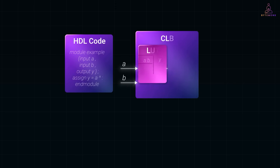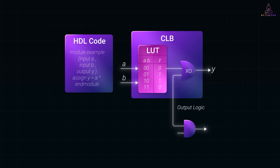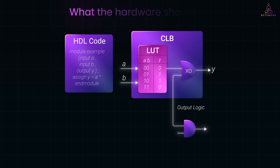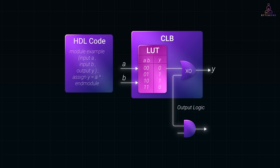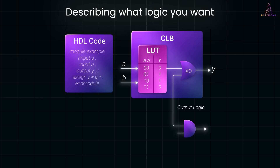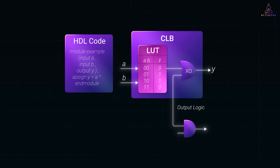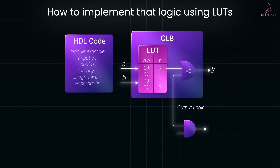To program the FPGA, you don't write traditional code like Python or Java. Instead, you use a hardware description language or HDL, like Verilog or VHDL. HDL doesn't describe step-by-step instructions — it describes what the hardware should be, not what it should do. So when you write code in Verilog or VHDL, you're not directly saying 'put this value in this LUT.' Instead, you're describing what logic you want, and the FPGA toolchain — like Vivado or Quartus — figures out how to implement that logic using LUTs.